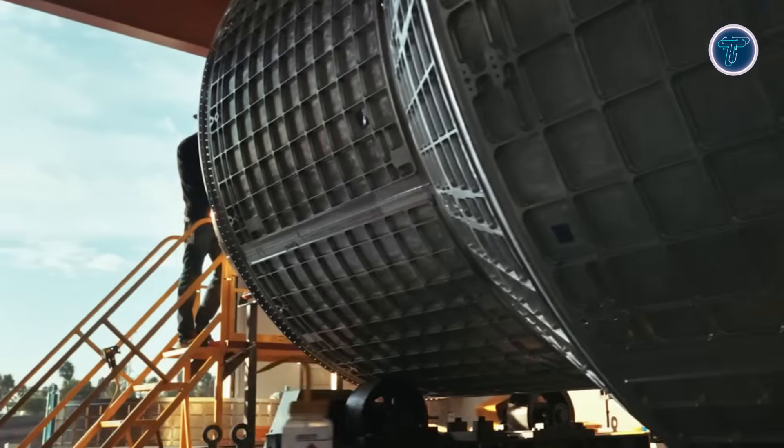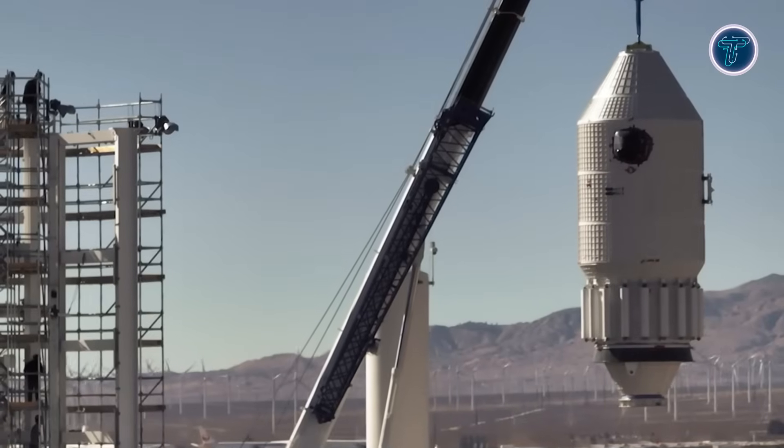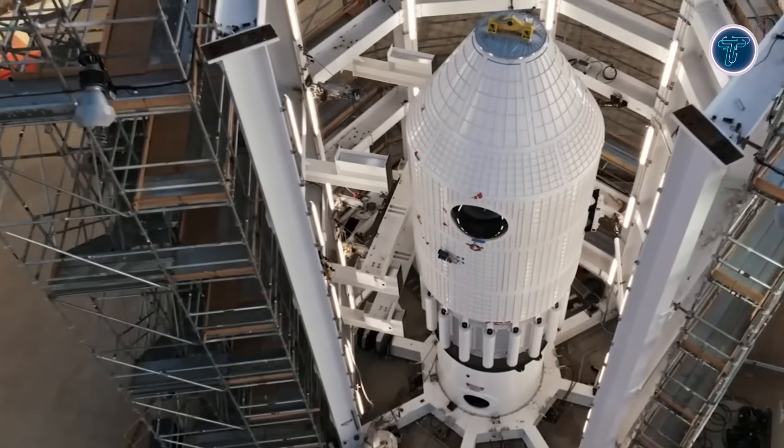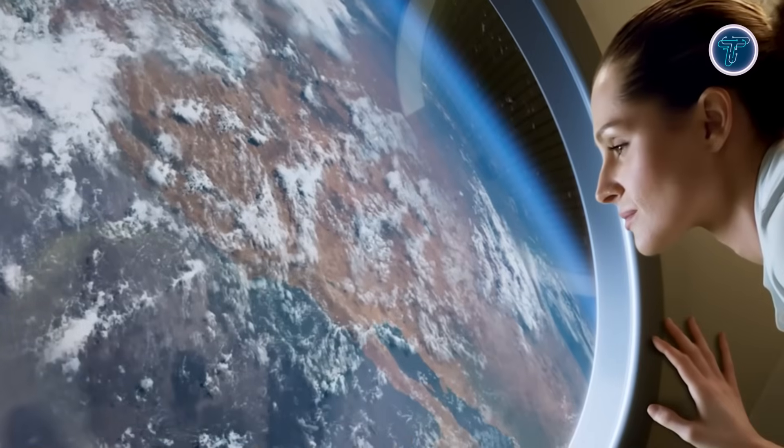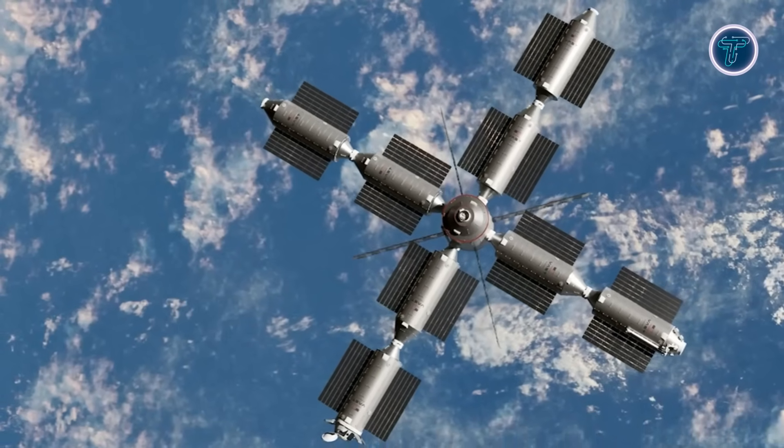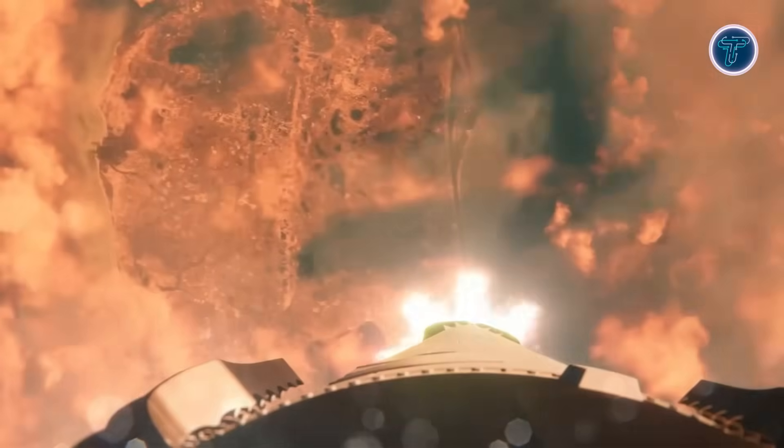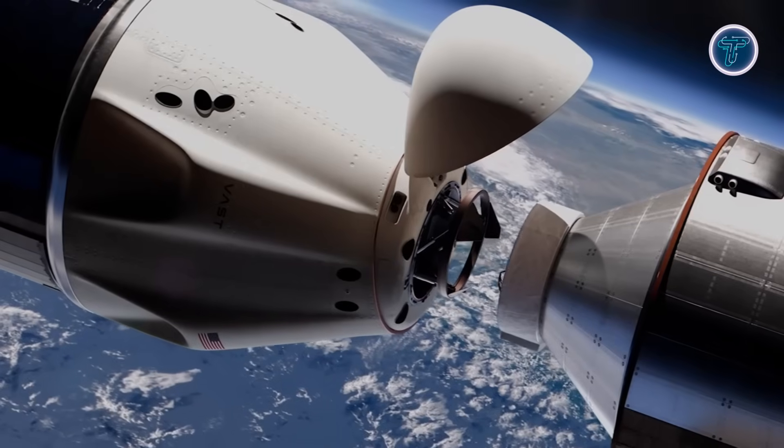VAST isn't stopping there. By 2028, the company plans to launch Haven 2, a more advanced multi-module station featuring robotic arms, multiple docking ports, and experimental artificial gravity. These stations are designed to pick up where the International Space Station leaves off, enabling long-term human habitation and commercial activity in low-Earth orbit. Supported by partnerships with NASA and SpaceX, VAST's initiative, aptly named The Next Giant Leap, aims to transform space from a destination into a permanent frontier. This ambitious plan marks a critical step towards sustainable living and working in space for future generations.